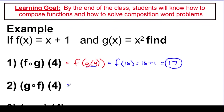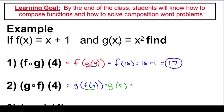Now let's switch the order — this means g of f of 4. f of 4, evaluating from the inside out, means going to the f function and plugging in a 4: that's 4 plus 1, or 5. This now becomes g of 5. Going to the g function and plugging in a 5 gives 5 squared, which is 25. Really important: f of g of 4 gives 17, but g of f of 4 is 25. You're going to get different answers when the order of composition switches.